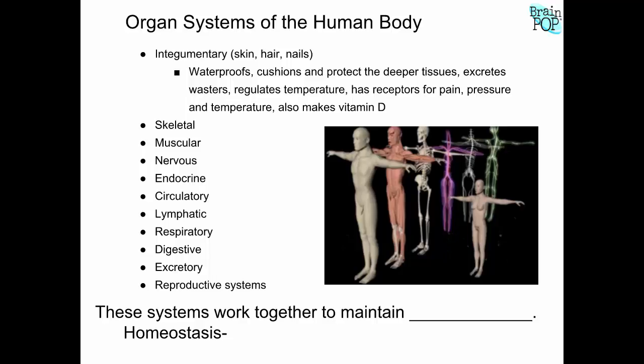The one we don't really spend time on is the integumentary system — your body's outer cover. It includes hair, nails, and skin. It's an important body system even though we don't spend a lot of time on it. It keeps us watertight so we don't dry out, prevents pathogens like bacteria from getting into our body, helps regulate our temperature by allowing heat to escape, and allows us to sense things through touch and temperature sensors.